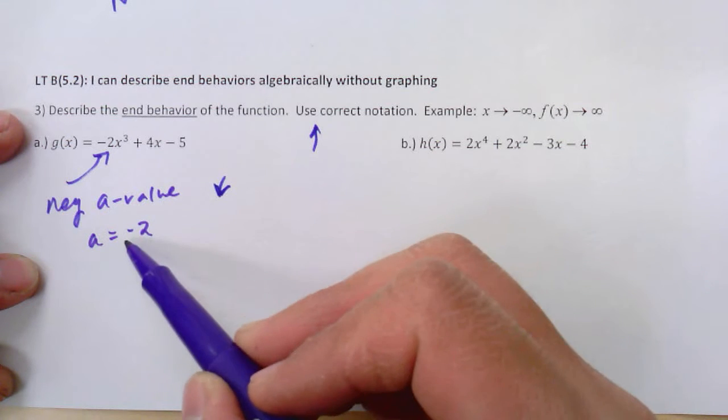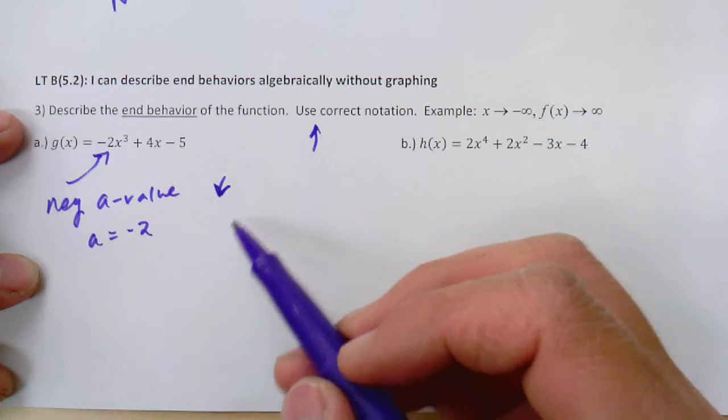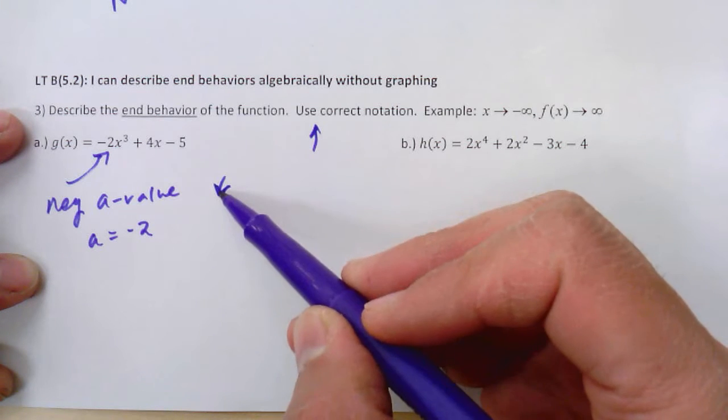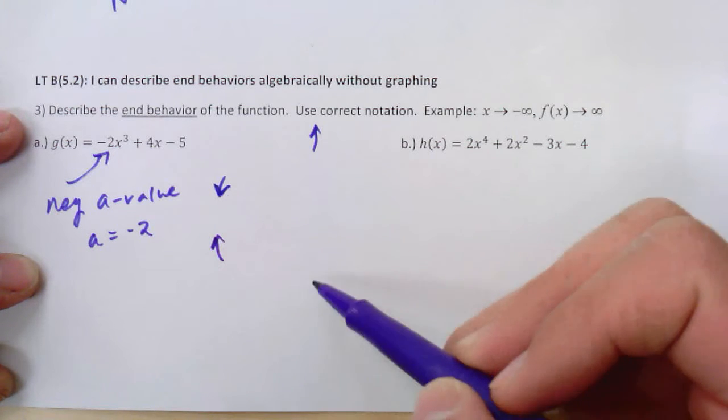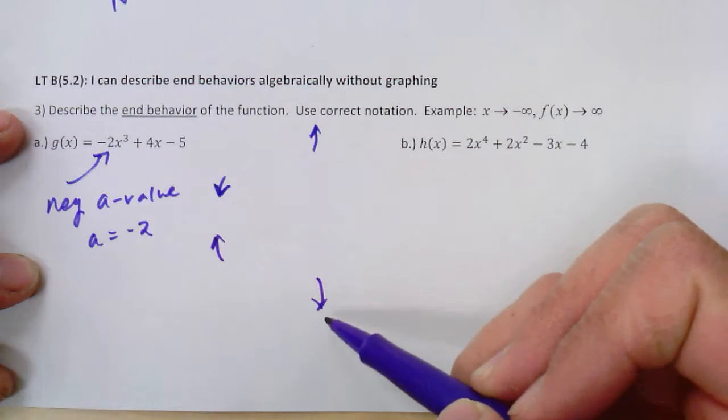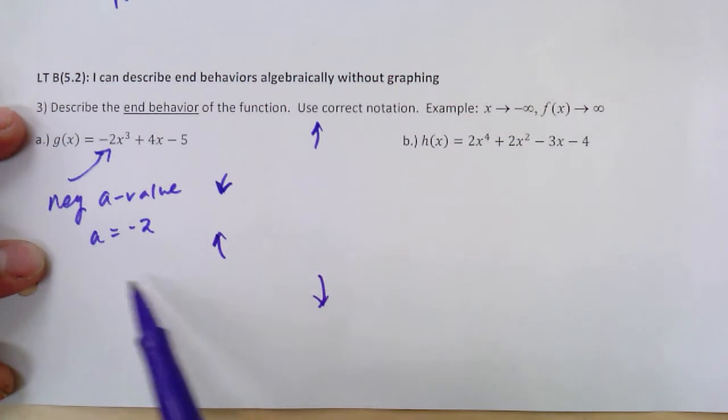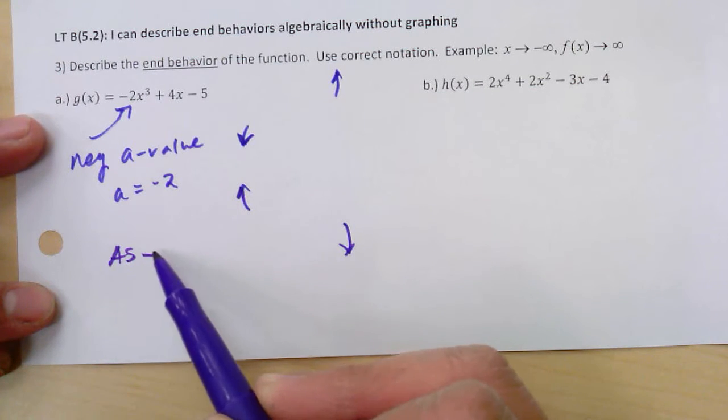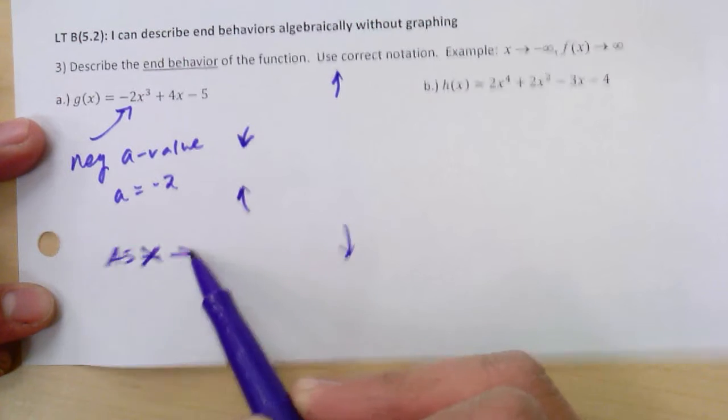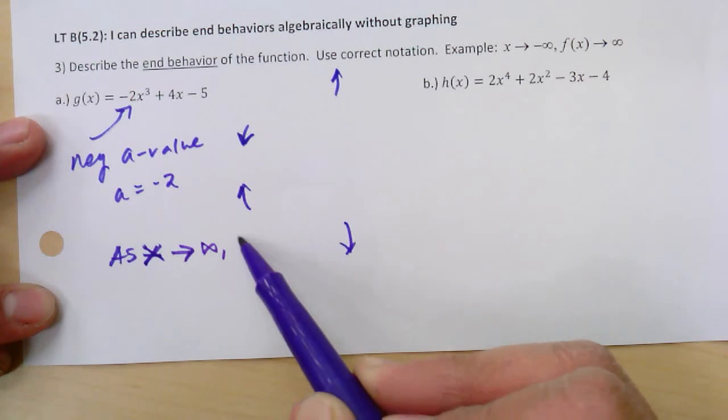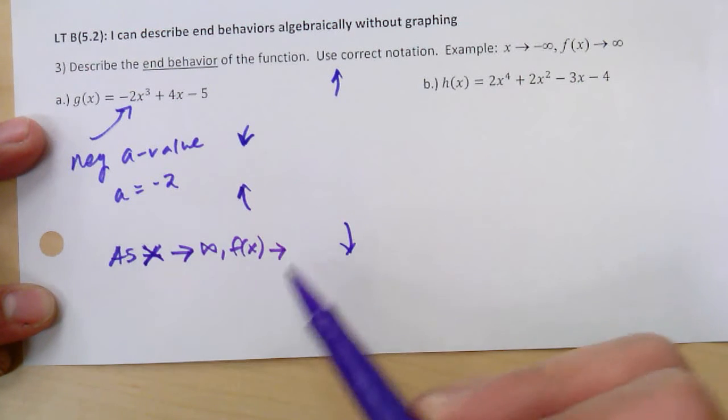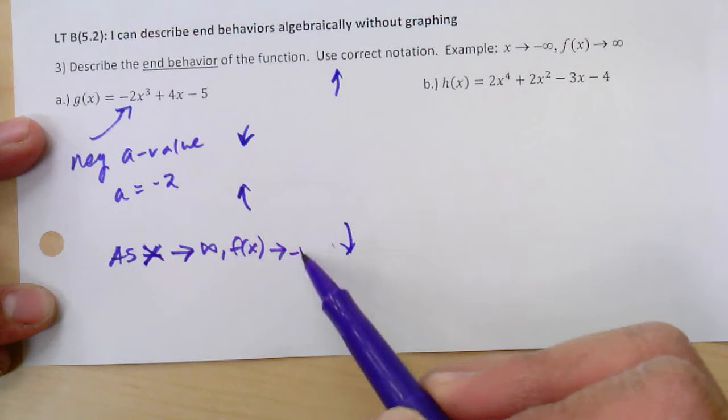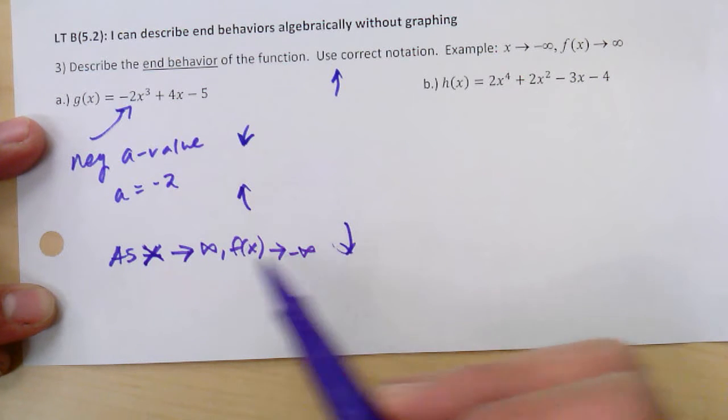So what that's saying is it actually reflects the graph over the x-axis. So now, instead of going down, it's actually going to come up and then finish going down, but we're going to describe the end behavior of this using function notation. We're going to say as x goes towards positive infinity, f of x goes towards negative infinity. So I'm describing this one's end behavior.